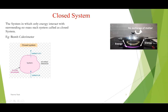Consider a system where we are boiling water in a closed vessel. During this process, no mass — such as vapors — is transferred to the surroundings. However, some amount of heat energy is transferred to the surroundings through conduction. This indicates that only energy is interacting with the surroundings and there is no mass interaction, making it one of the best examples of a closed system.